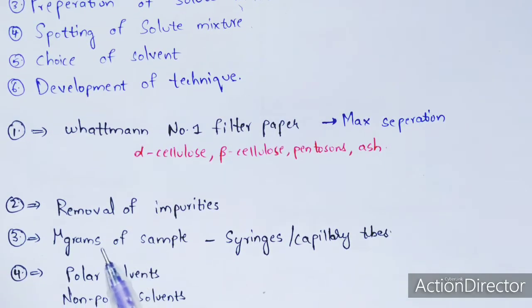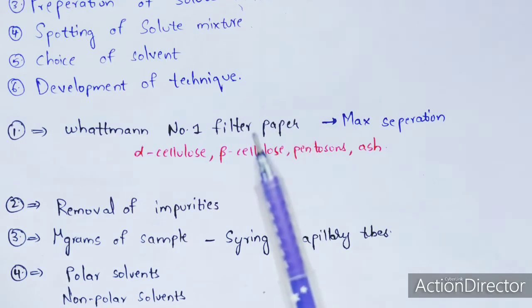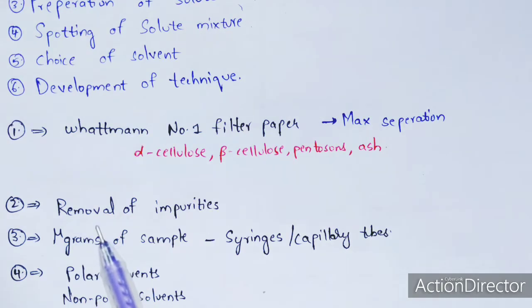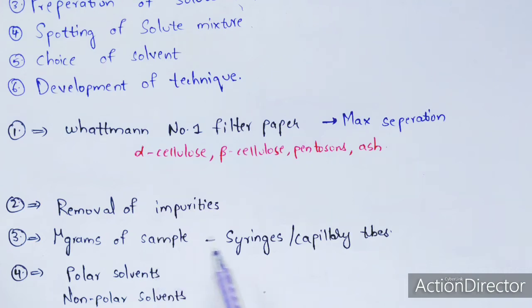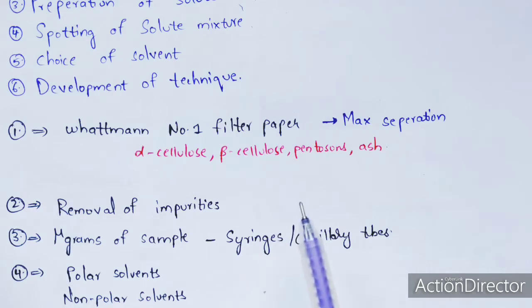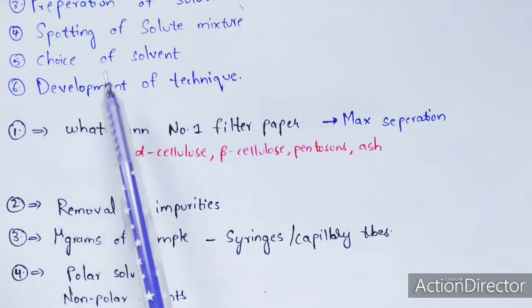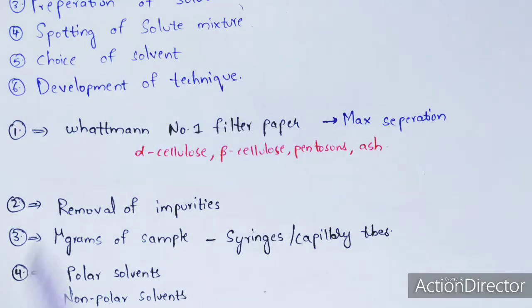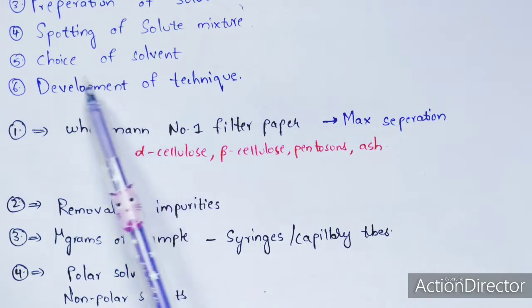For preparation of the solute mixture: the sample should be taken only in microgram quantity, not milligram. The sample should be extracted using a syringe or capillary tube and applied on the paper at the start point. Spotting of the solute mixture occurs at the start point.